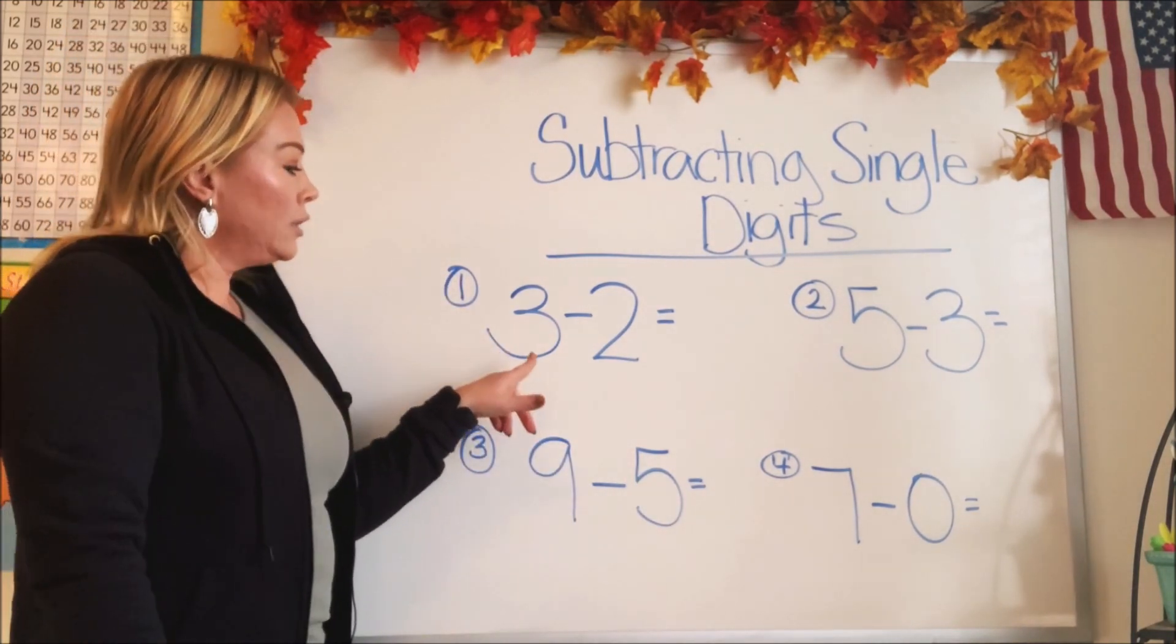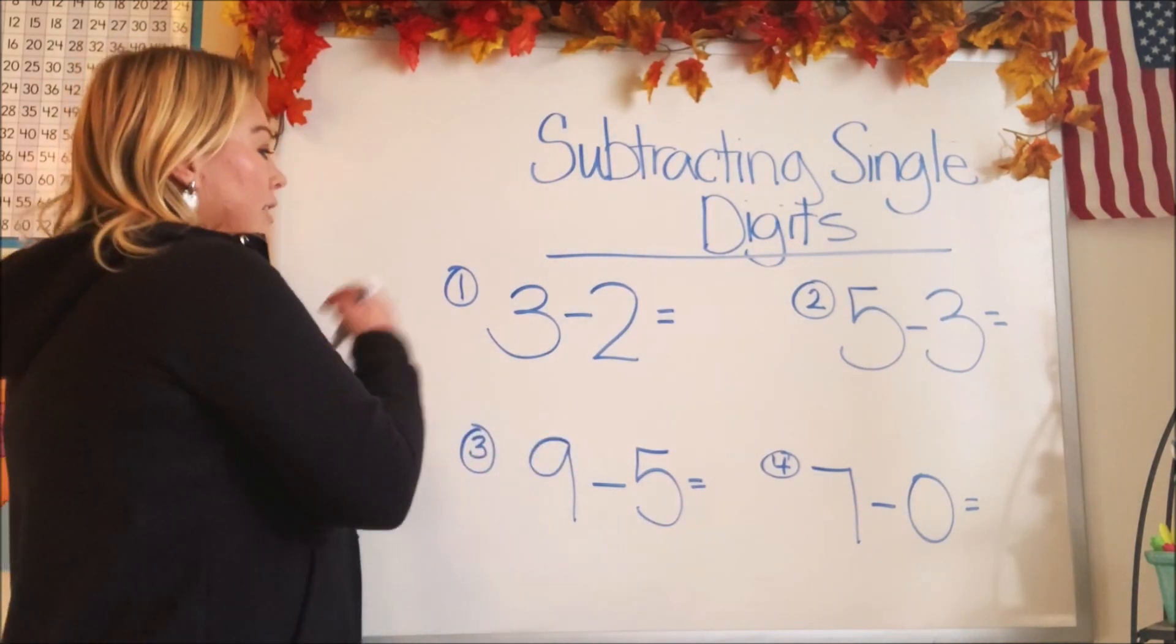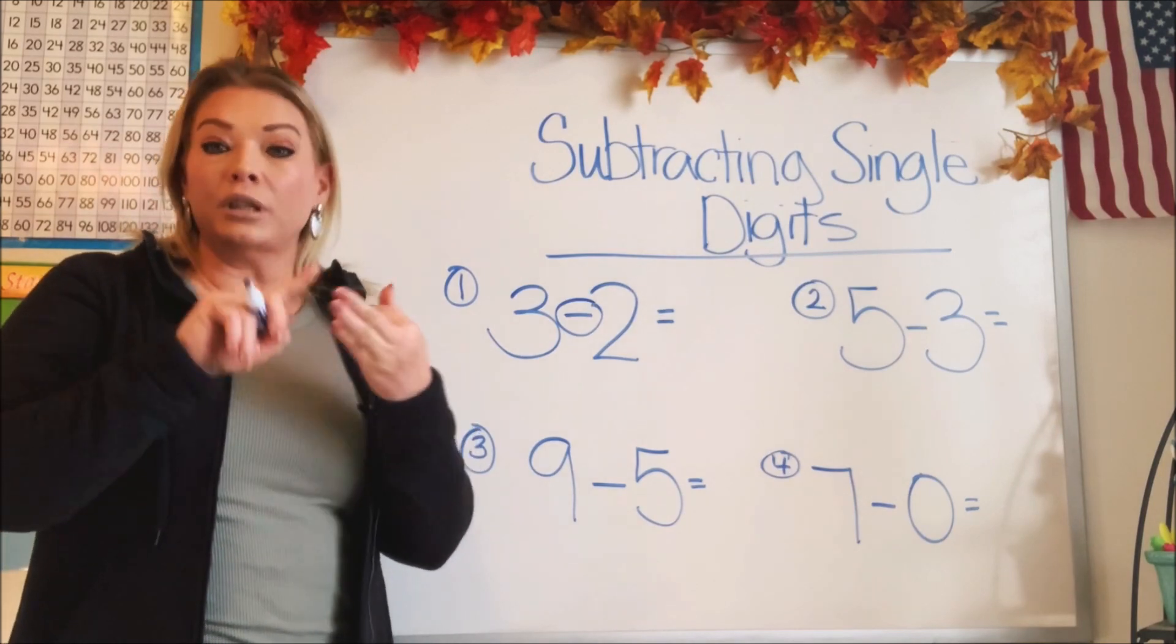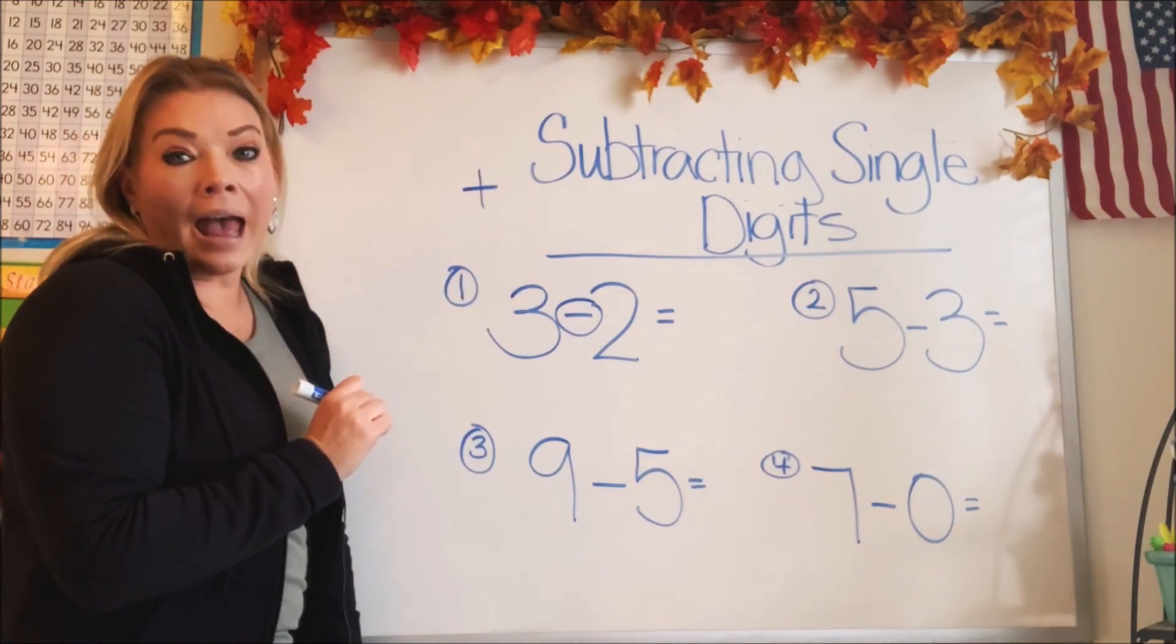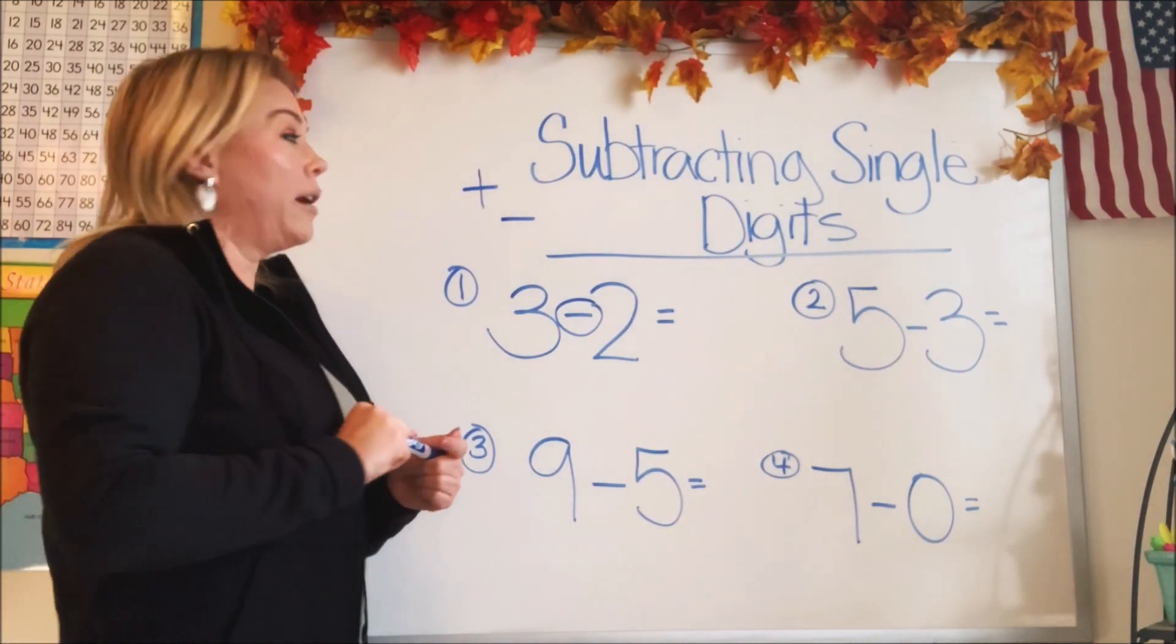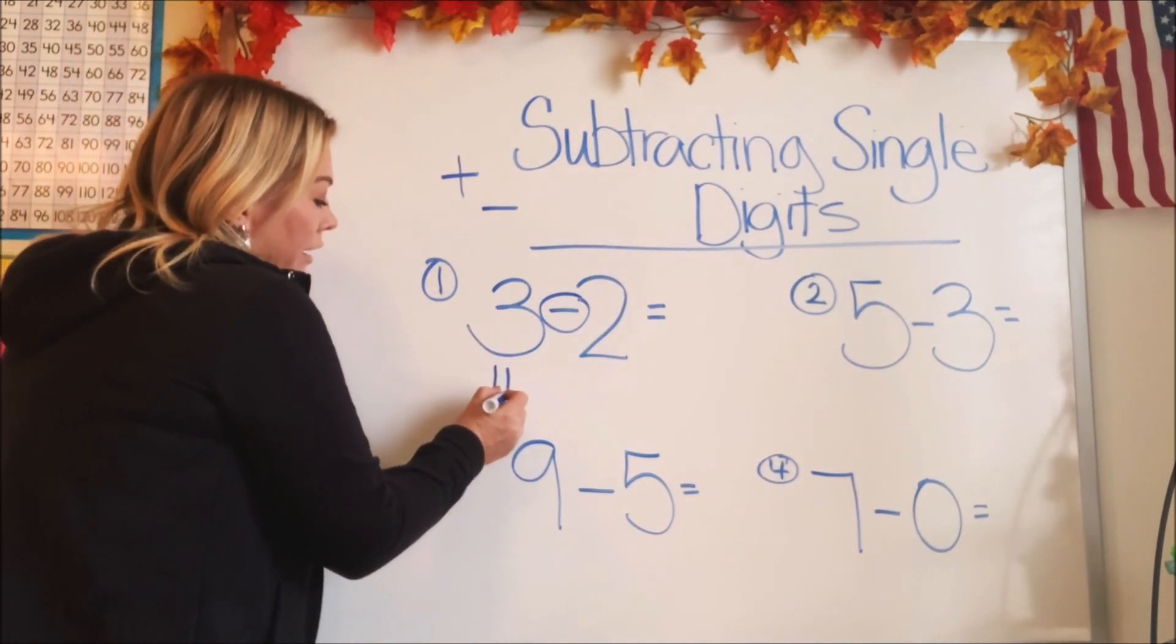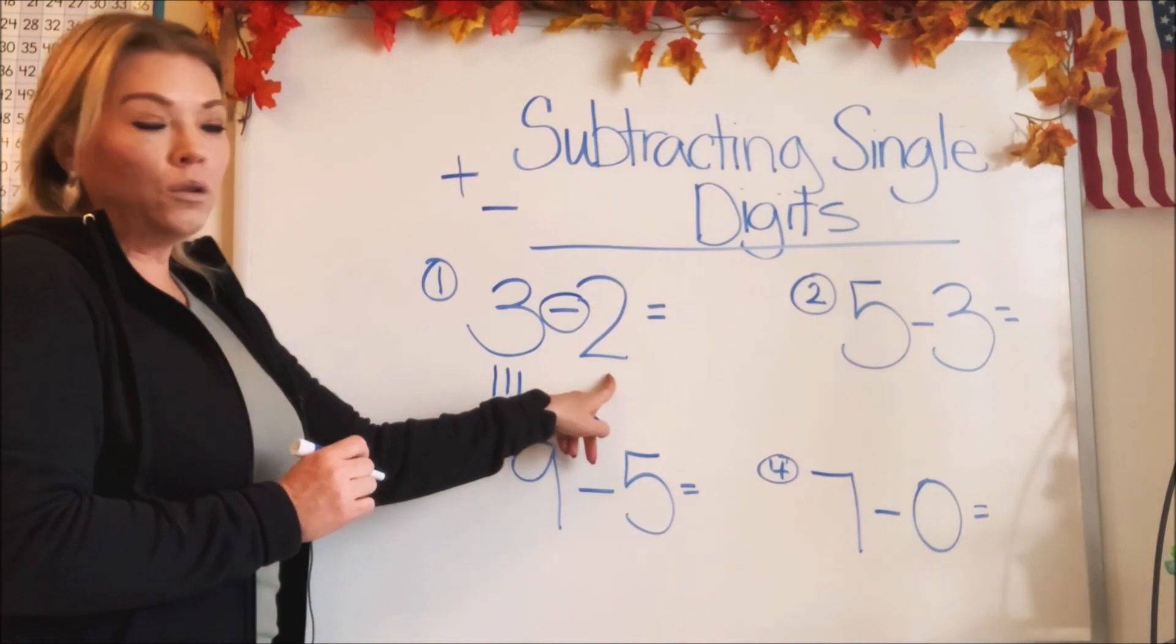Let's start with the first one. The first one says three minus two. This little dash right here means to subtract or take away or minus or reduce. Those all mean the same things. So the little plus means to add, right? And the little dash means to subtract or take away. So on the first one, it says we have three items. Let's do some dashes. Three lines or dashes. And it wants us to subtract or take away two of them.